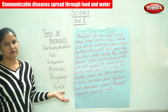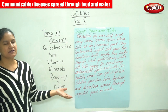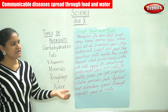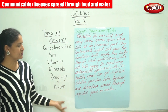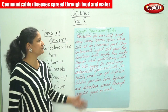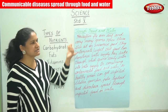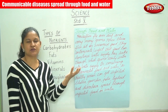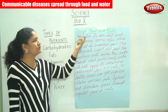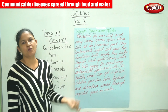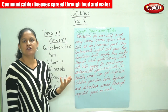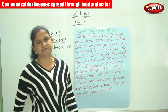Cholera, jaundice, typhoid, polio, and diarrhea spread through infected food or water. In summary, diseases spread through direct contact or by air, or through contaminated food or water.